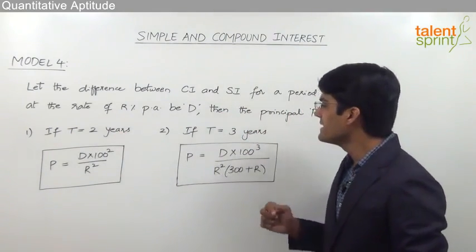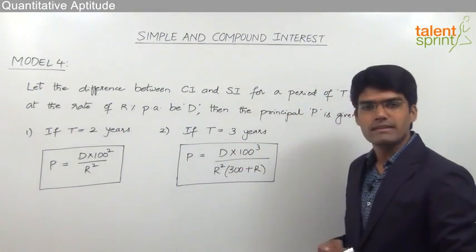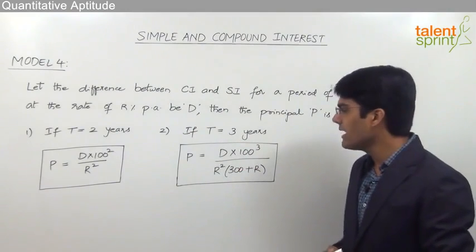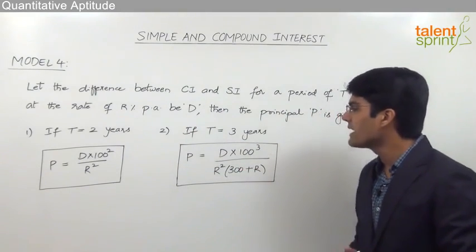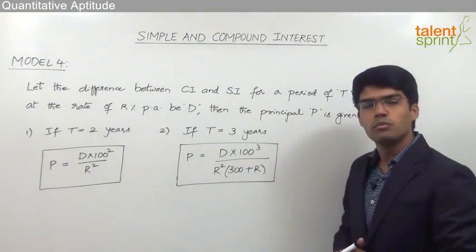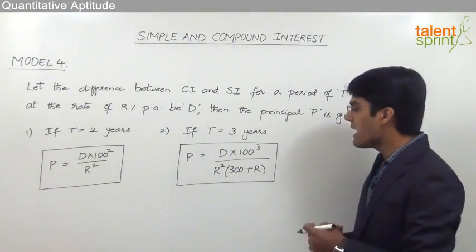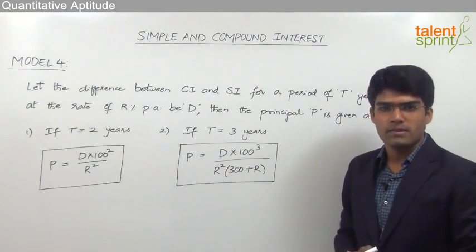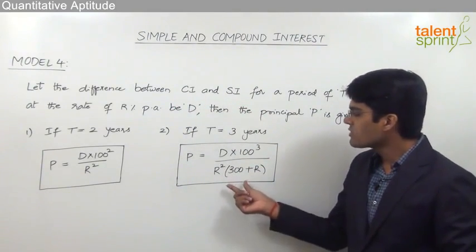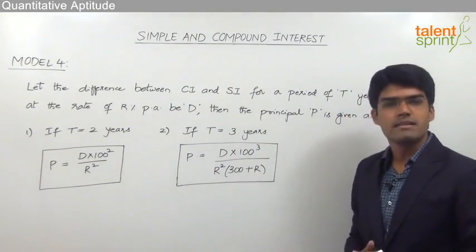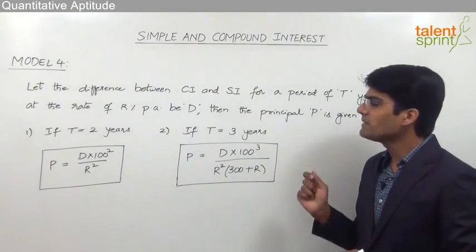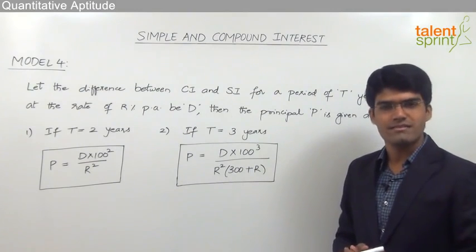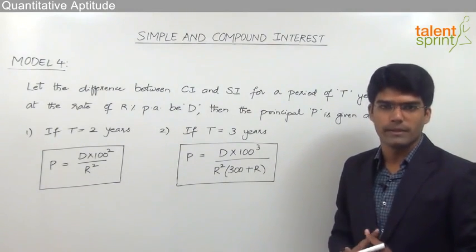The second case is when the time is equal to 3 years. There the principal P can be calculated as D into 100 cubed divided by R squared into 300 plus R, where again D is the difference between CI and SI and R is the rate of interest per annum. This formula has to be applied when the time period is equal to 3 years. With the help of these two formulas we can solve questions related to difference from this topic.